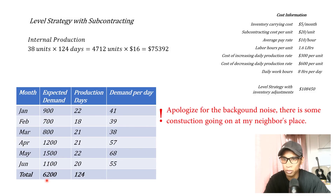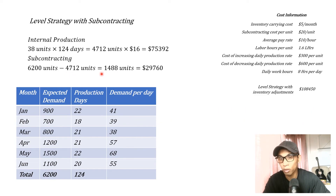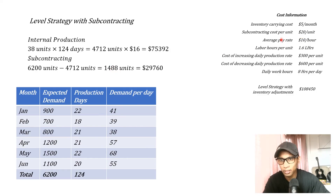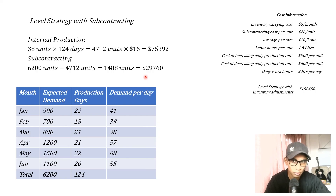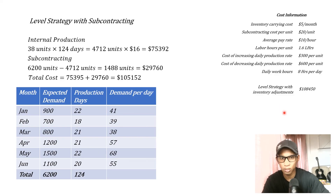Total demand is 6,200 units, so the units to subcontract = 6,200 − 4,712 = 1,488 units. Subcontracting cost = 1,488 × $20 = $29,760. There are no hiring, layoff, or inventory holding costs in this strategy. Total cost = $75,392 + $29,760 = $105,152.